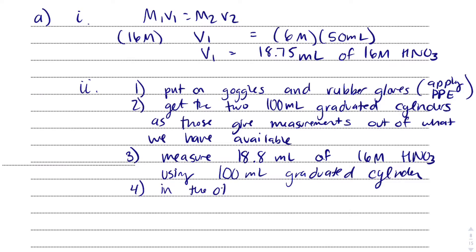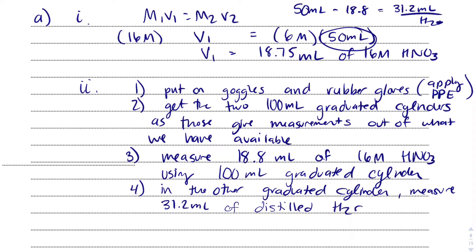In the other graduated cylinder, we need to measure - if the total volume is 50, 50 milliliters minus 18.8, that's going to be 31.2 milliliters that we need of water. So measure 31.2 milliliters of distilled water.